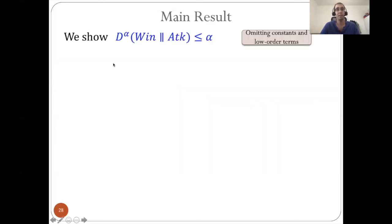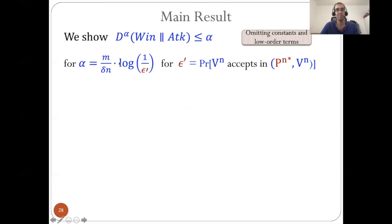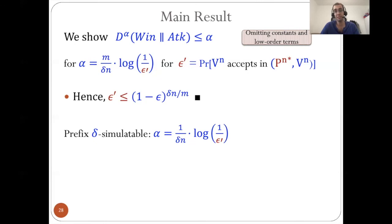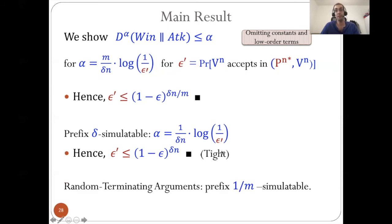Summarizing our main results: we showed that the alpha-smooth KL-divergence of 'win' and 'attack' is smaller than alpha for an appropriate choice of alpha, where delta comes from the partial simulatability and epsilon-prime is the probability that P-N-star wins all verifiers. This immediately gives that epsilon-prime must be small, since otherwise 'win' and 'attack' are so close under this distance measure that the attack is too good. In the prefix partially-simulatable case, we can save a factor of M, giving a tighter decrease rate that is tight and includes random terminating arguments, which are prefix 1-over-M simulatable.